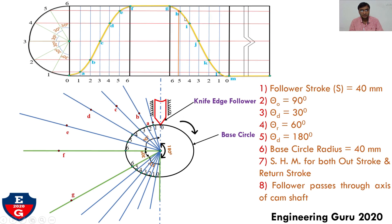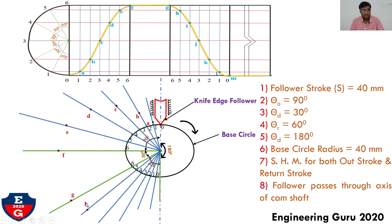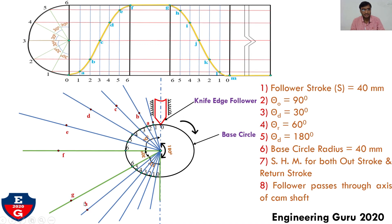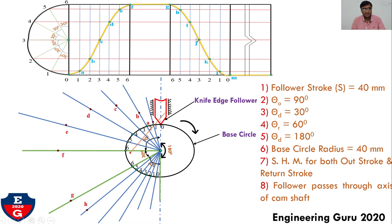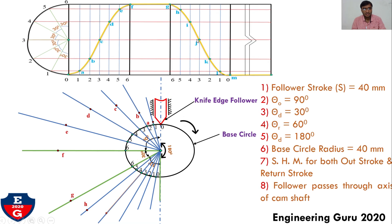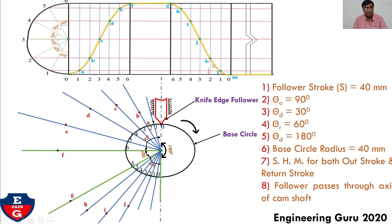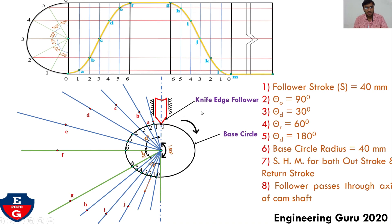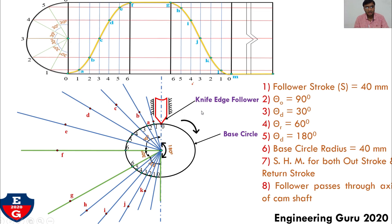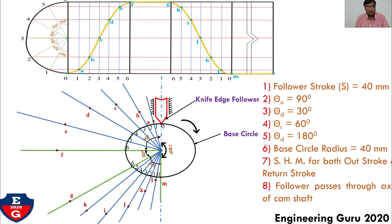Similarly, for the return stroke: take distance from displacement diagram point G and from the sixth return division draw an arc — this is point G. Then take radius 5 to H from the fifth division — this is point H. In the same way, find points I, J, K, L, and finally point M, which is our final return stroke point.